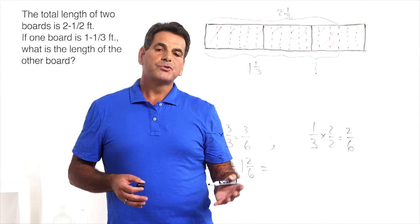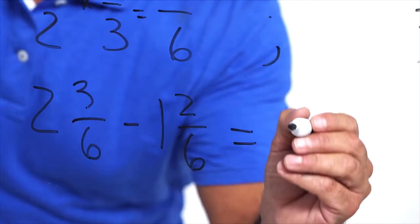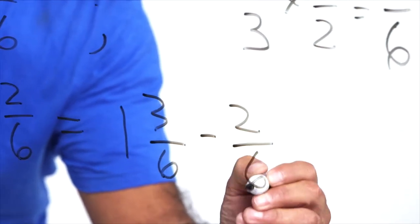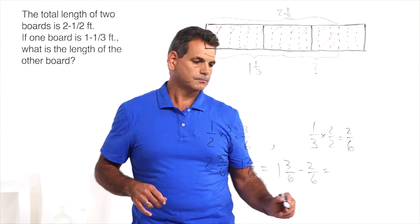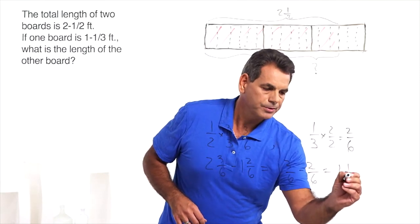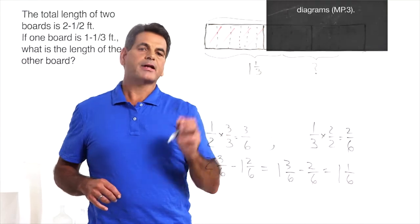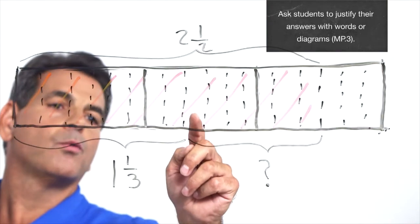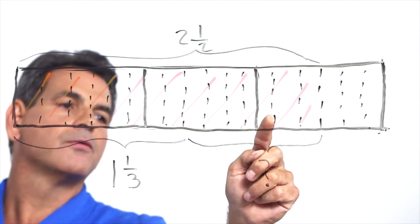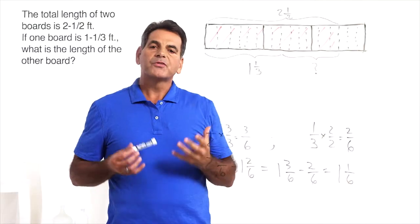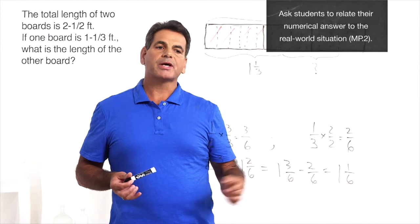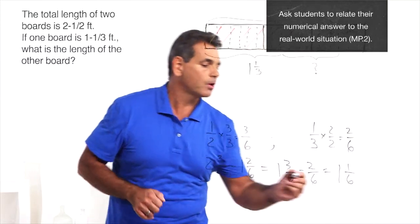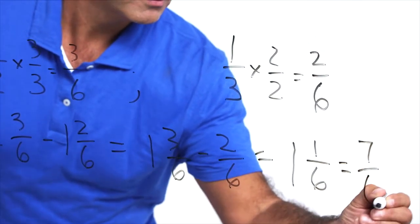Now when subtracting mixed numbers, you can deal with the whole numbers first. So 2 minus 1 is 1, and we'll attach 3 sixths minus 2 sixths equals 1 and 1 sixth. Let's check that on the model. 1 and 1 sixth is equivalent to 7 sixths. So let's count. We're at 1, 2, 3, 4, 5, 6, 7. So the size of the other board is 1 and 1 sixth or 7 sixths of a foot. 2 and 3 sixths minus 1 and 2 sixths equals 1 and 1 sixth or 7 sixths.